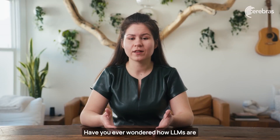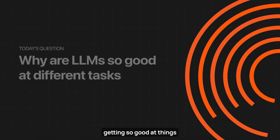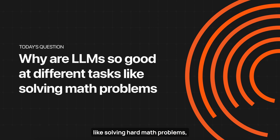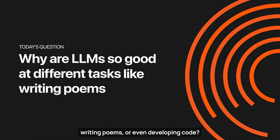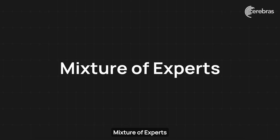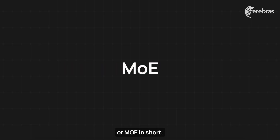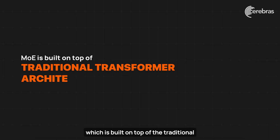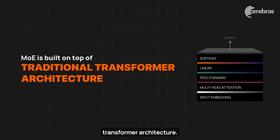Have you ever wondered how LLMs are getting so good at things like solving hard math problems, writing poems, or even developing code? It's thanks to a powerful technique called Mixture of Experts, or MOE in short, which is built on top of the traditional transformer architecture.